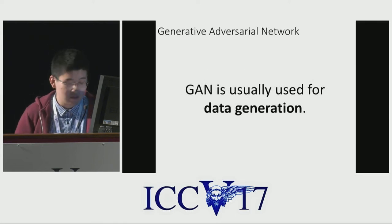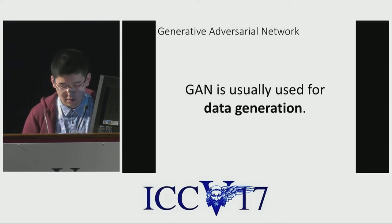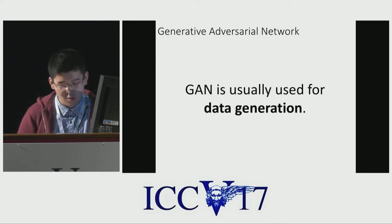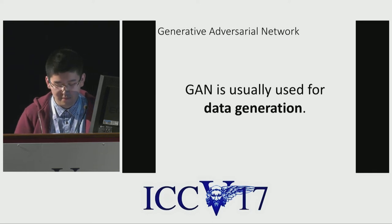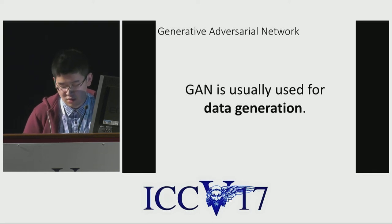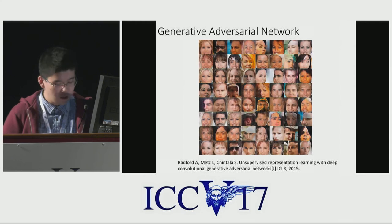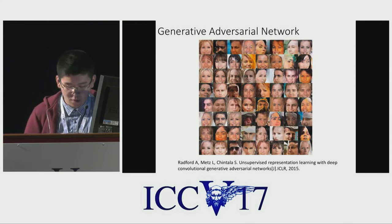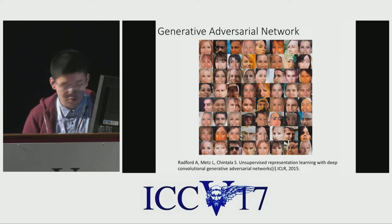Generative Adversarial Network, GAN, is usually used for data generation. Two networks fight with each other to improve the generation performance. For example, we can use GAN to generate human images which look real.